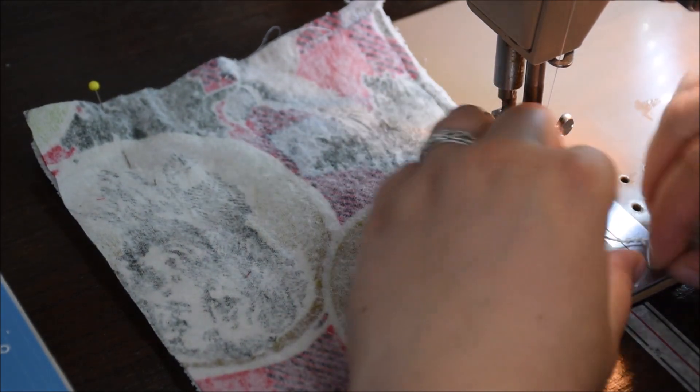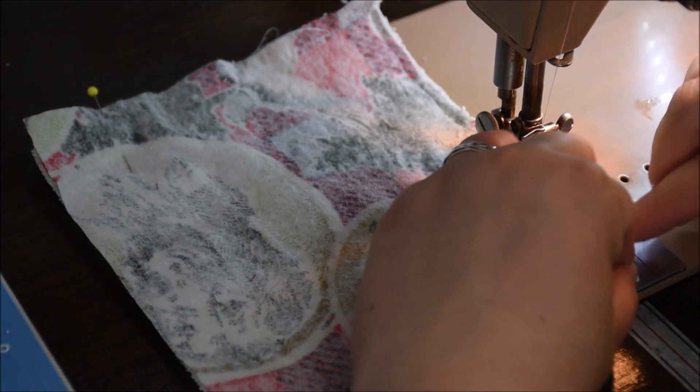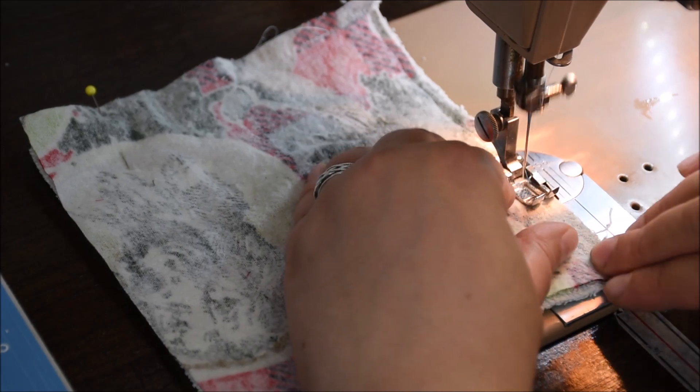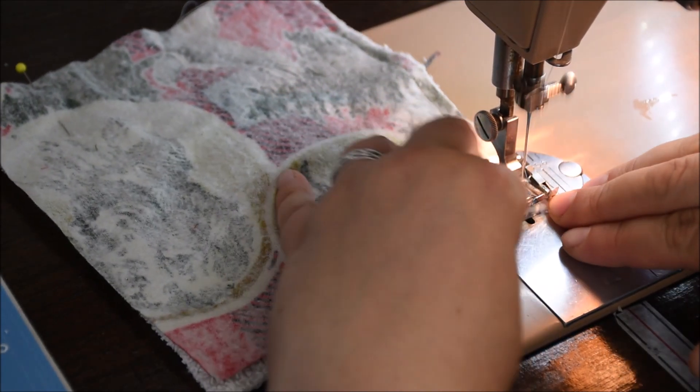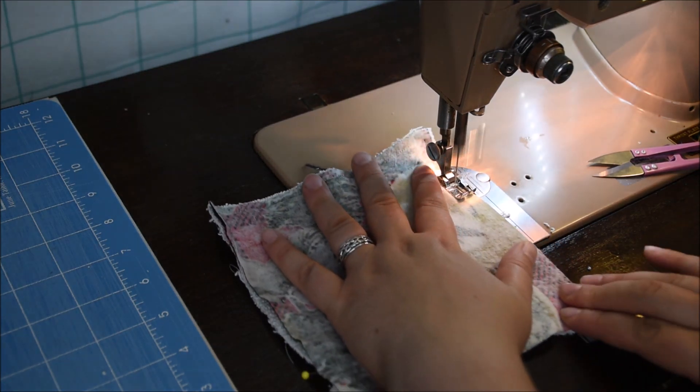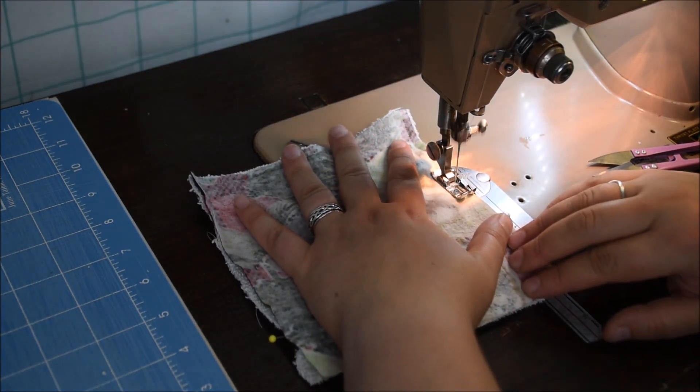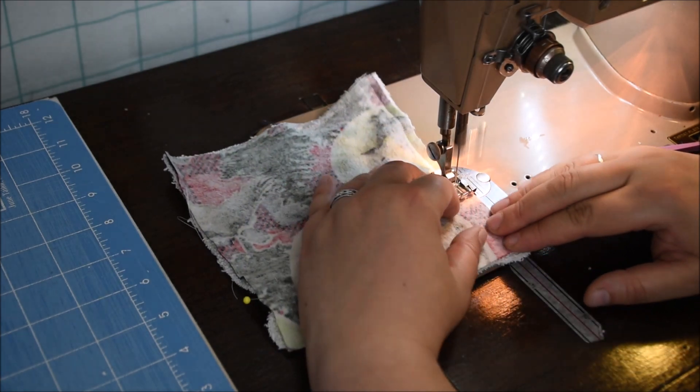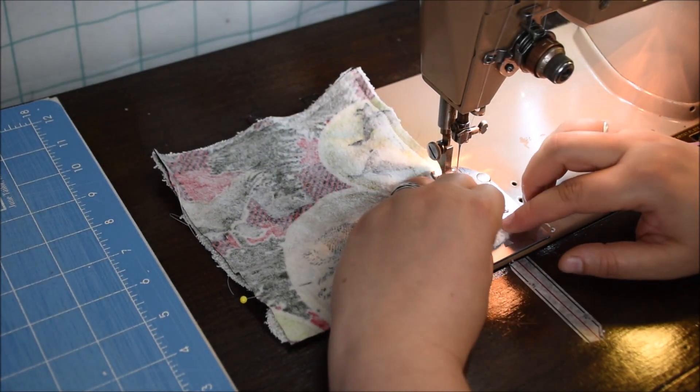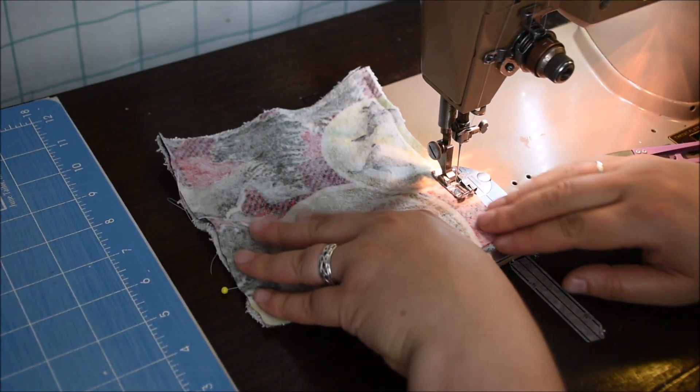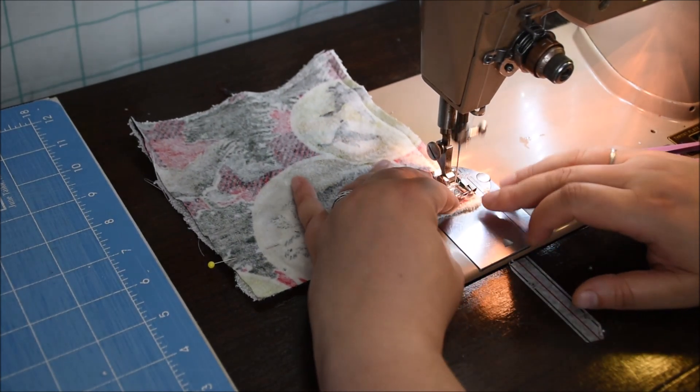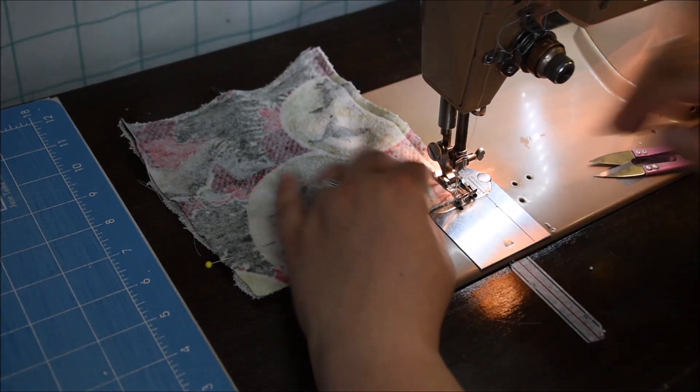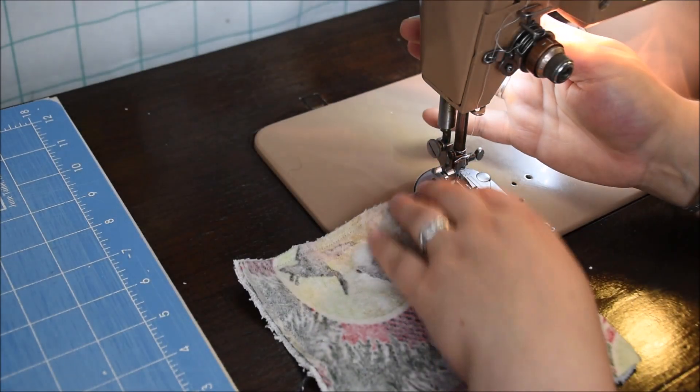You want to make sure that you're leaving an opening so we can turn this around. So again, kind of fussily here trying to keep the layers together, although really it doesn't matter too much because this is a scrappy project and we're going to be top stitching anyway. Just going to keep going all the way around, about a quarter of an inch.